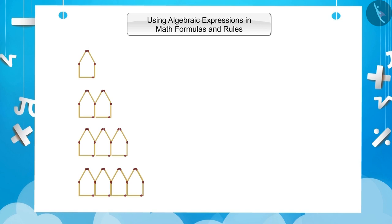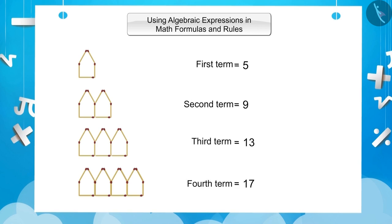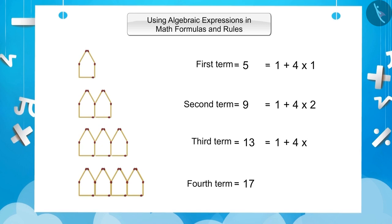If we consider the number of math sticks as one term, the first term will be five, the second term will be nine, the third term will be thirteen, and the fourth term will be seventeen. We can also represent five as 1 plus 4 multiplied by 1, nine as 1 plus 4 multiplied by 2, thirteen as 1 plus 4 multiplied by 3, and seventeen as 1 plus 4 multiplied by 4.